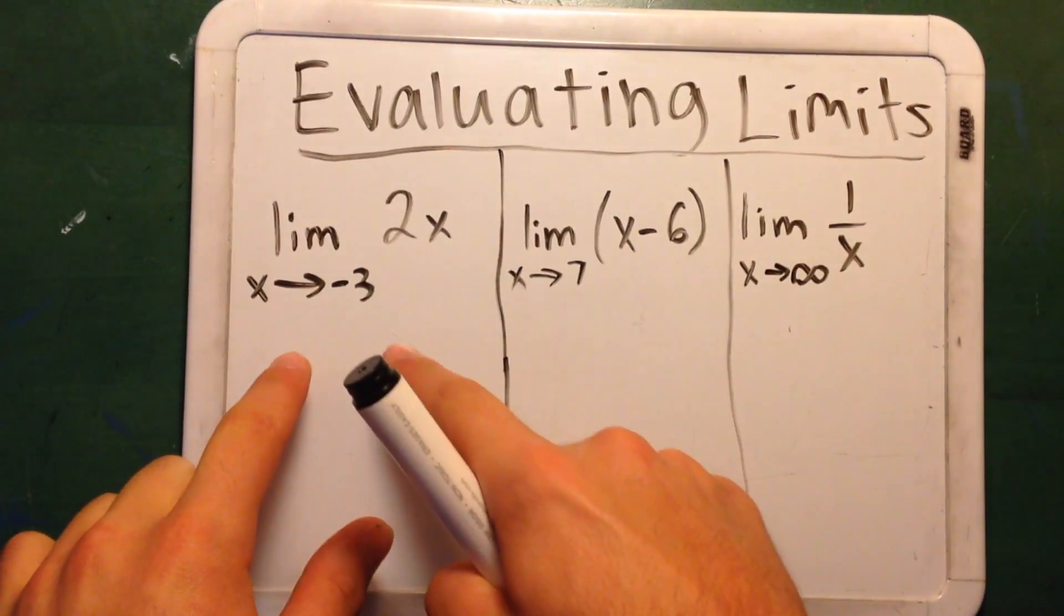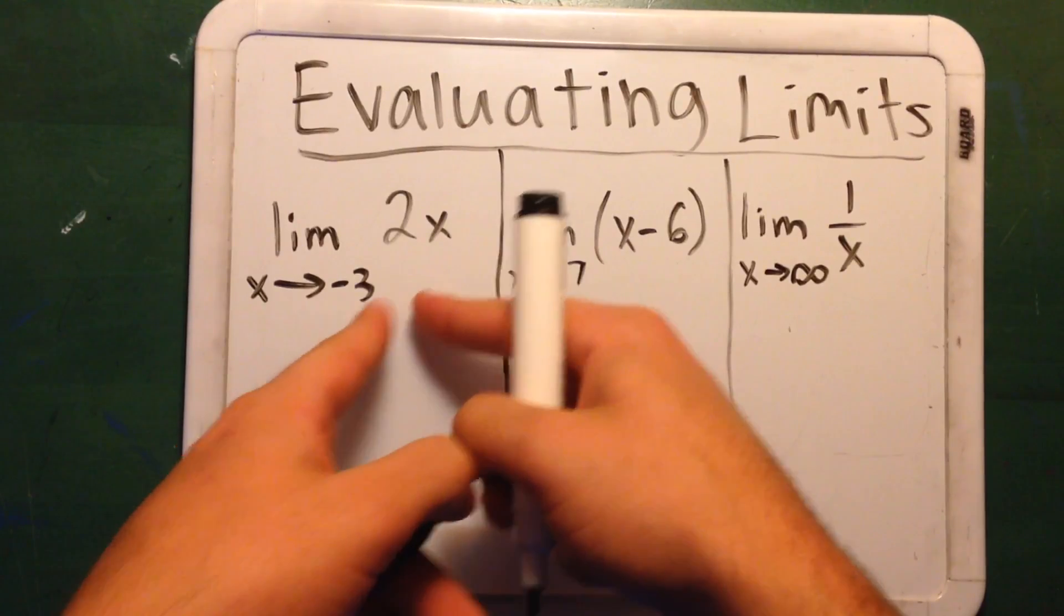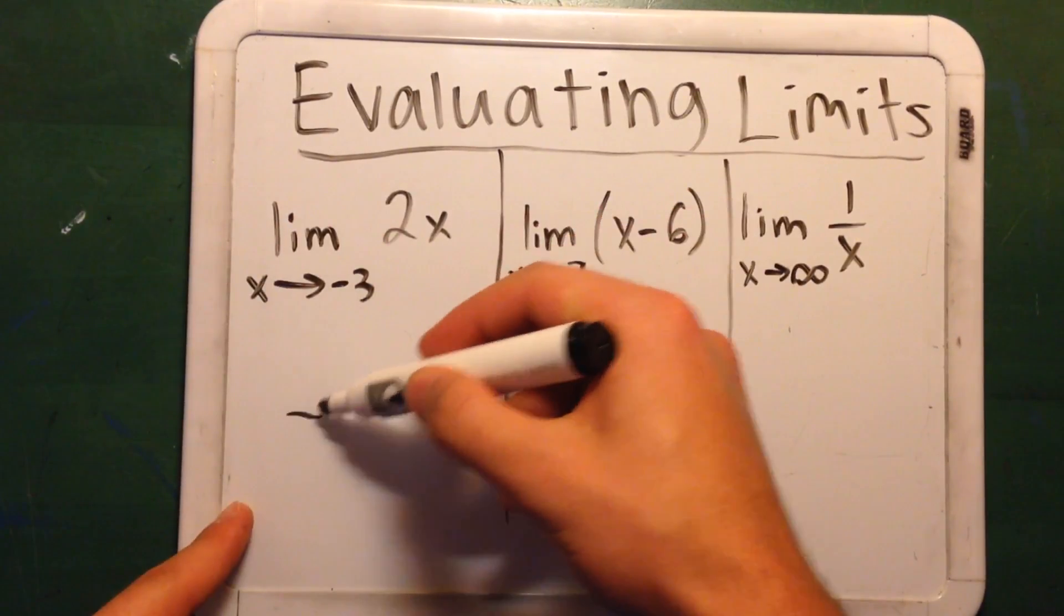Beginning with this limit right here, as x approaches negative 3, just substitute negative 3 here for x and we're going to get negative 6.